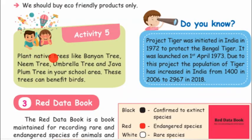We will plant native trees like banyan tree, neem tree, umbrella tree, and java plum tree in the school area. These trees can benefit birds and other animals.